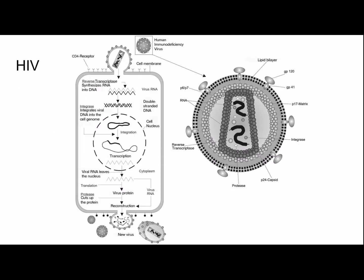This picture shows HIV, human immunodeficiency virus, which is an example of a retrovirus. It binds to a specific receptor on the cell membrane — in this case the CD4 receptor — and reverse transcriptase synthesizes RNA into DNA. Integrase then integrates the viral DNA into the cell genome. Then transcription and translation occur, and the proteins needed are created. The new virus can leave the cell, taking some glycoproteins from the cell membrane with it.